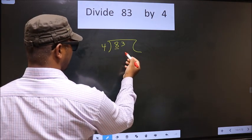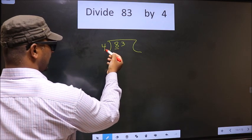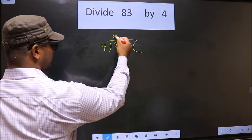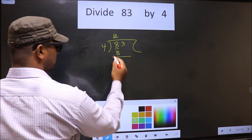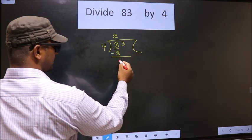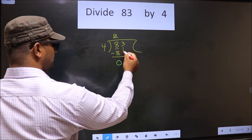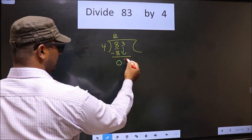Now here we have 8. When do we get 8 in 4 table? 4, 2, 8. Now you subtract 8 minus 8, 0. Now we bring down the beside number 3 here.